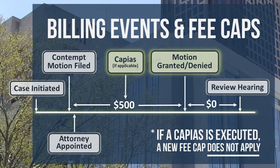When representing a client on this case type, there is only one billable event. Contempts are billable upon the final judgment entry disposing of the motion. Please note that a client is no longer entitled to appointed counsel for any further enforcement or review hearings.